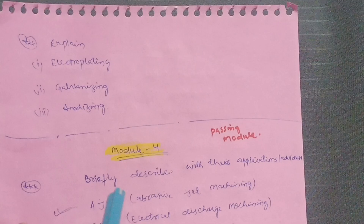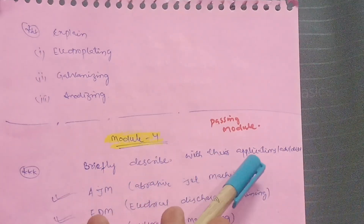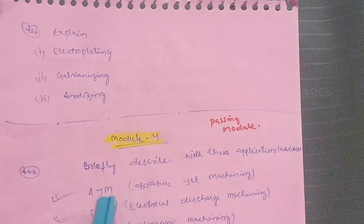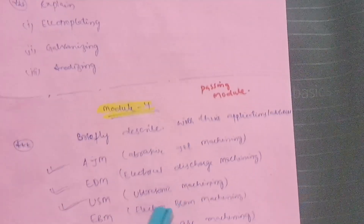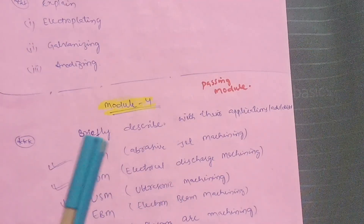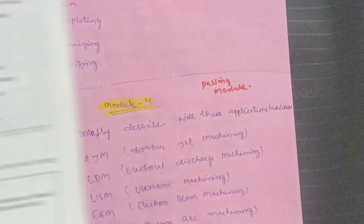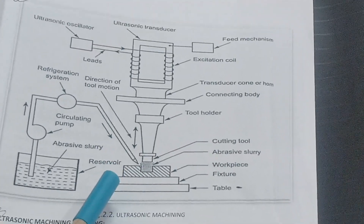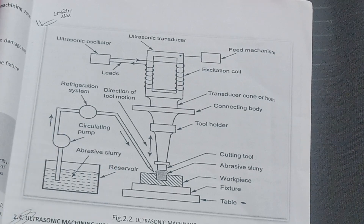In the fourth module, questions will be like: describe with applications, advantages, and disadvantages. You have to describe AJM (Abrasive Jet Machining), EDM (Electrical Discharge Machining), and USM (Ultrasonic Machining). Let me show you some interface of these notes so you get clarity. This is the ultrasonic machine diagram — you have to focus on the diagrammatic part to understand the concepts.